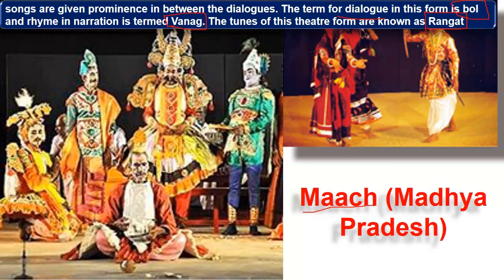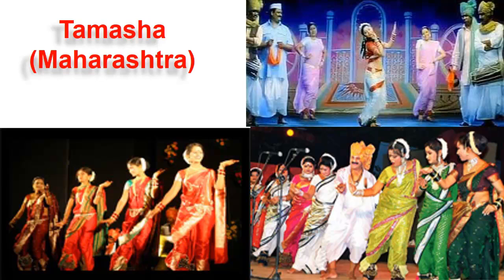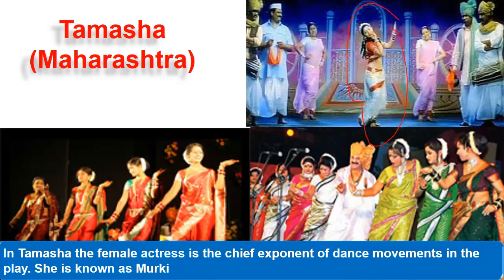Next is Tamasha, which is also important - it is a drama from Maharashtra. In Tamasha, the lead actress is the chief exponent of dance movements, and she is called Murki. But just remember the key fact: Tamasha is from Maharashtra. So reviewing: Natanki from UP, Jatra from eastern India, Bhavona or Ankiya Nat from Assam, Bhavai from Gujarat, Maach from Madhya Pradesh, Tamasha from Maharashtra.